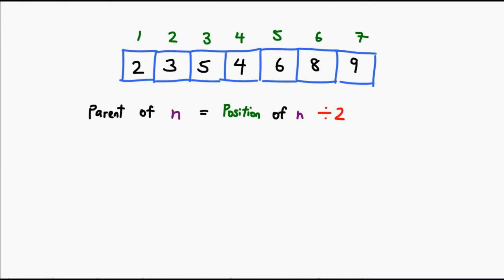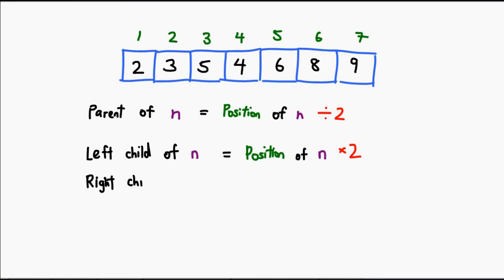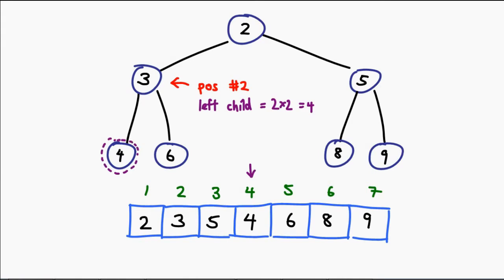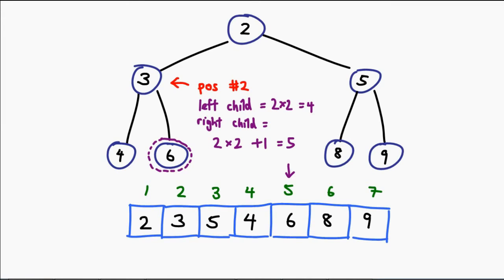Moving on, when we want to find out which one is the child node of a particular node, all you have to do is take its position and multiply it by 2. That will point you to its left child. If you add 1 to that position, you will get the position of the right child. Here it is in action: to get the left child of a node, I simply multiply its position by 2. Its right child is located at double its position plus 1.